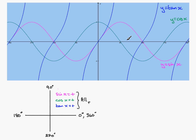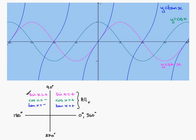Looking at the interval between 90 degrees and 180 degrees, only the sine graph is above the x-axis, so only sine is positive. The cosine and tan graphs are both below the x-axis, so the results would be negative for both cosine and tan. To summarise in the second quadrant: sine of x is positive, cos of x is negative, and tan of x is negative — so only sine is positive.